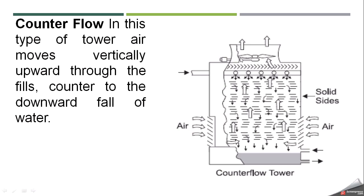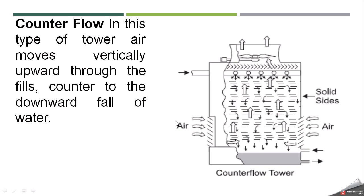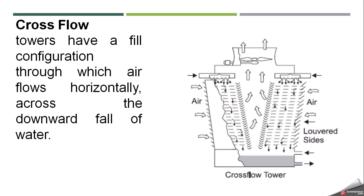Air moves counter to the hot water, and when the hot water interacts with the air it cools. The cooled water is then collected in the basin and recirculated in the system. This is the basic diagram of a counter flow cooling system — air comes in and water comes from the top, both crossing counter to each other, with cold water collecting in the basin and air exiting from the top.